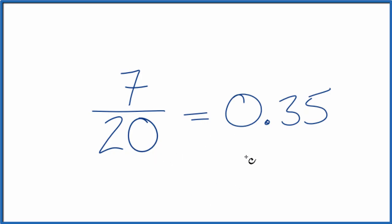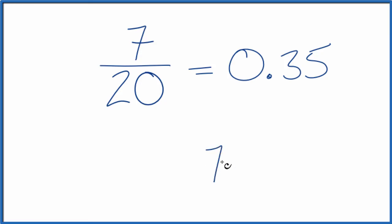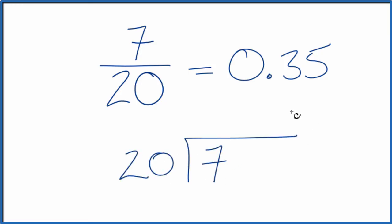We could also do this longhand. We could say 7 divided by 20. We have 7, and we want to know how many times 20 goes into 7. Well, it doesn't go into 7, so we could call this 70 and put a zero and a decimal point up here.